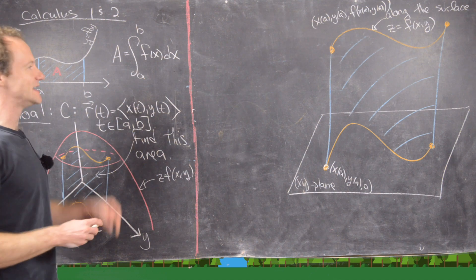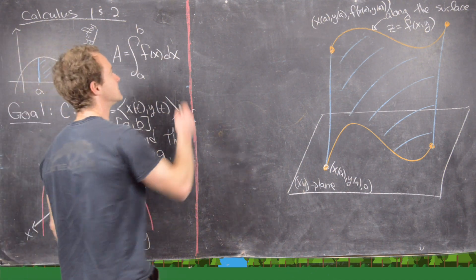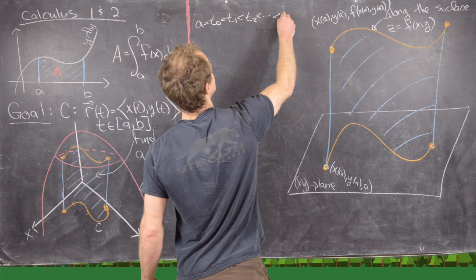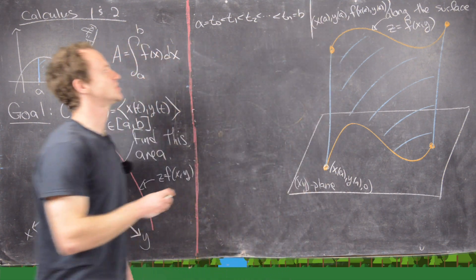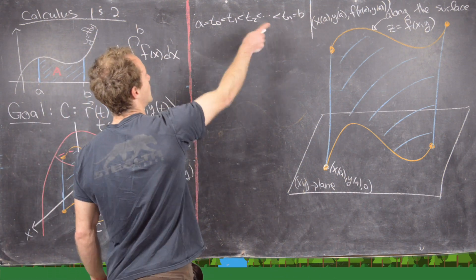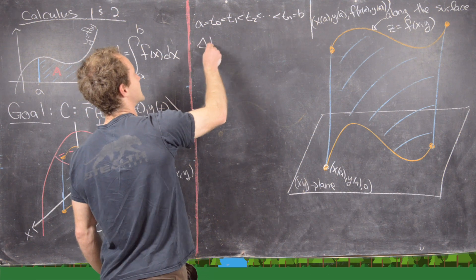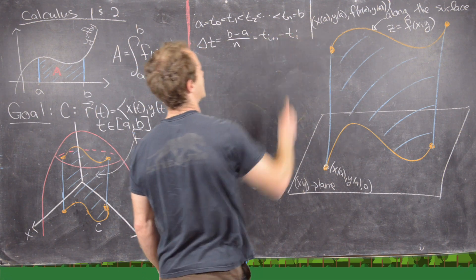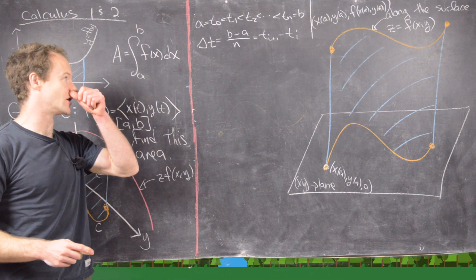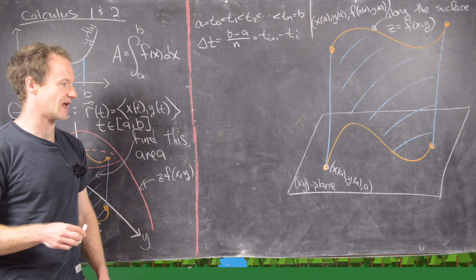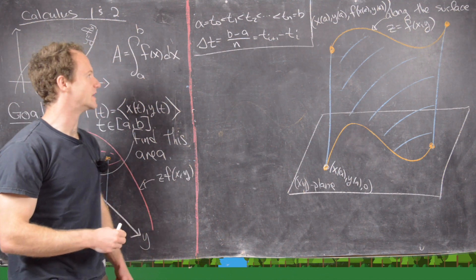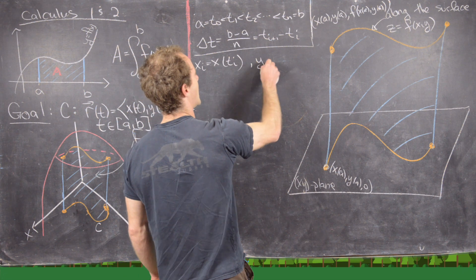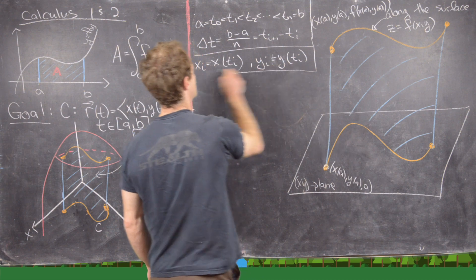We're going to take the interval [a, b] and partition it into n pieces. So a = t₀ < t₁ < t₂ < … < tₙ = b. We'll assume this is an even partition, so delta_t = (b − a)/n, which also equals t_{i+1} − t_i. For ease of notation, I'm going to set x_i equal to x evaluated at t_i, and y_i equal to y evaluated at t_i.